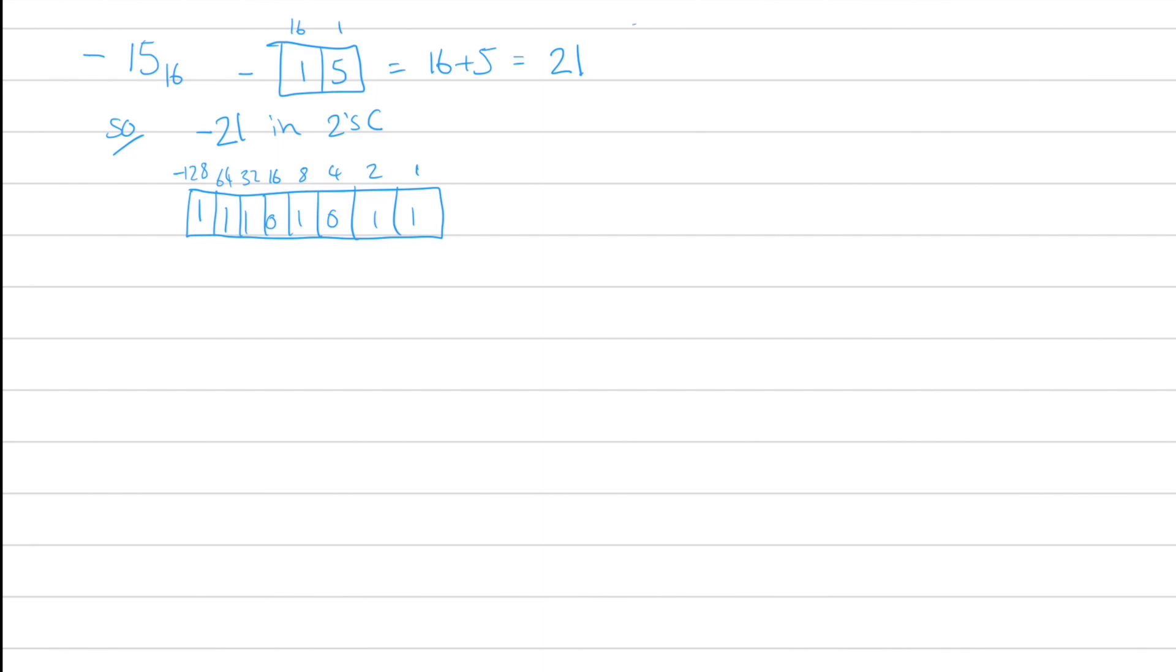We need to work out what c is then. Well, c is a single-digit hexadecimal value, which is 12. 12 in 2's complement doesn't require any minus 128s, so we just represent 12 on the second half.